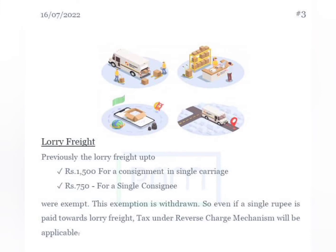Third one: previously, for local freight movement, there were consignments carried by truck and van. The GST liability will be attracted on the van and truck transport. For a single consignment transaction, GST liability will be attracted. From July 18th, this provision will change and tax will be payable on such freight transport services.